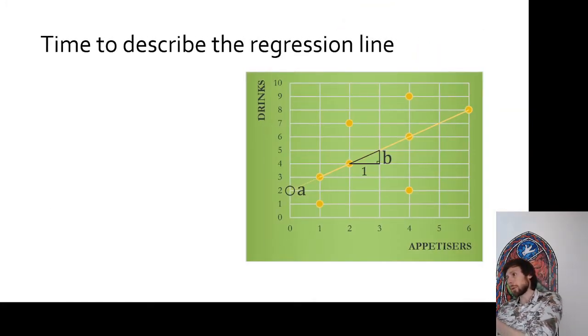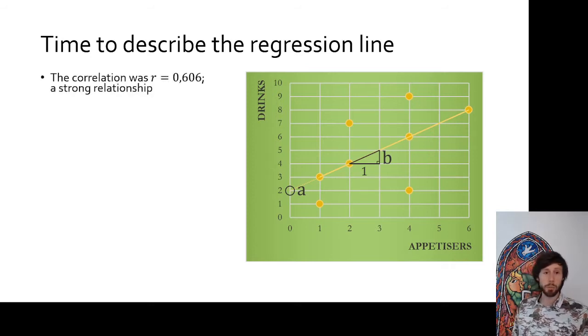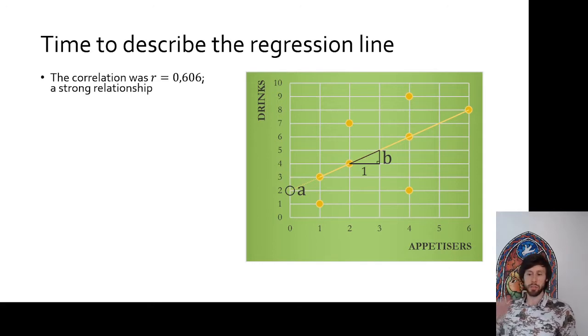It is time to describe the regression line itself that we draw through the graph. So here's a new scatterplot, this time on the basis of eight participants. Correlation was actually rather close to what we have seen in the previous example, 0.606, strong relationship.